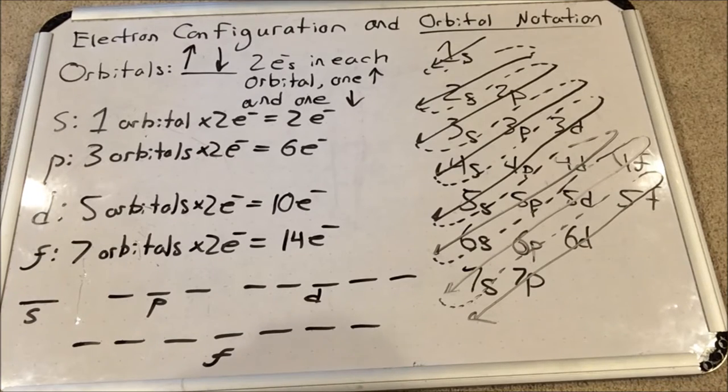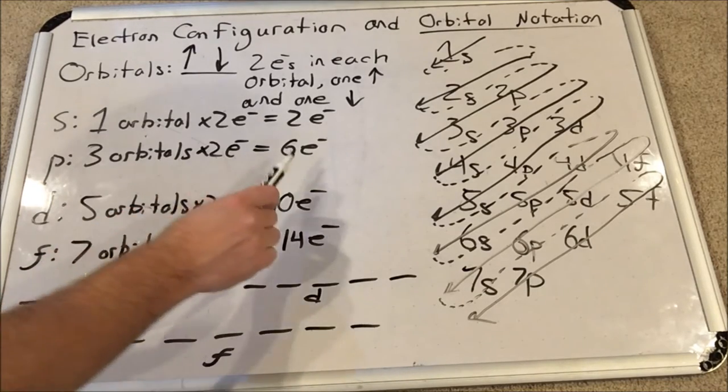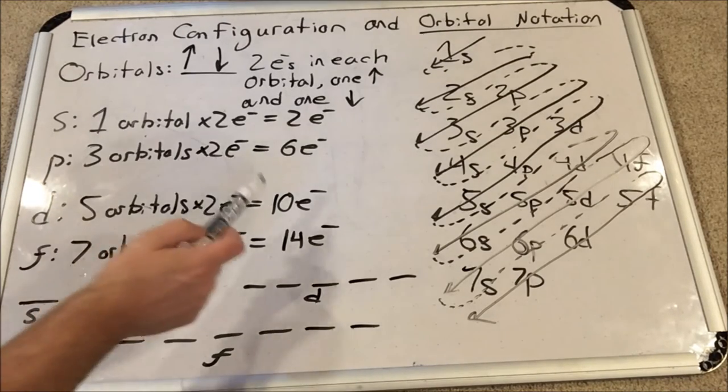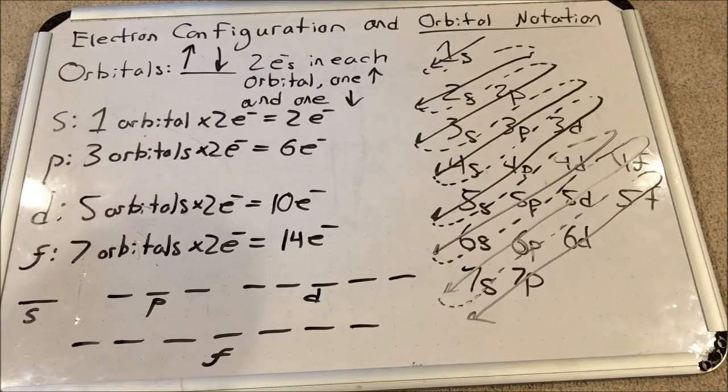The d sublevel has five orbitals which will make for ten electrons, and the f sublevel has seven orbitals which will make for fourteen electrons.